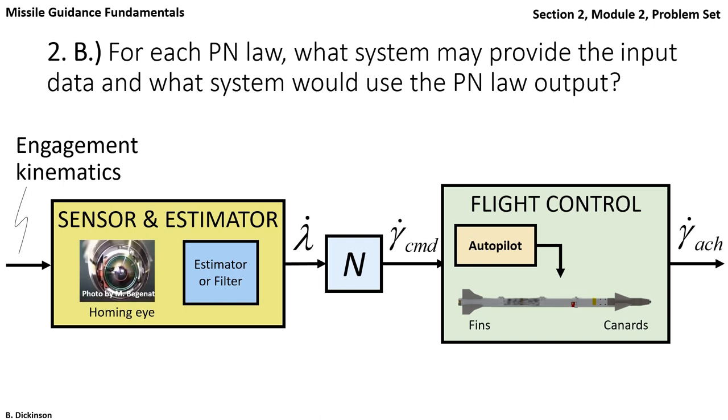The pronav law produces the desired gamma dot for collision. And the flight control system, that's the autopilot combined with the pursuer and its control effectors, attempts to achieve the desired gamma dot.